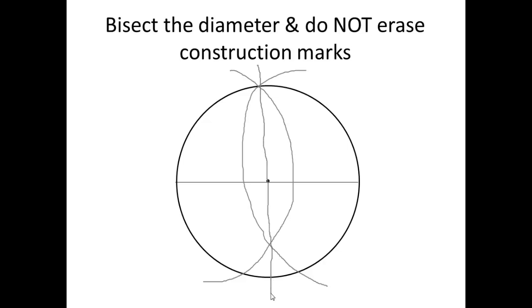Alright, the line that goes straight down through the center is your perpendicular bisector. Again, all these arcs must stay, including the bisector.